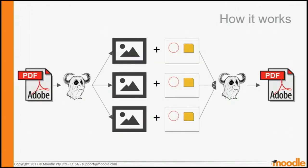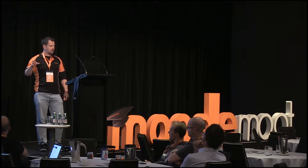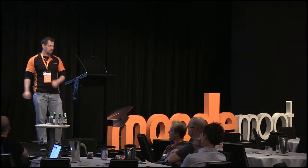The way that plugin works under the hood is it takes a PDF file and then uses a program on the Moodle server called Ghost Script to take that PDF and split it into a series of image files. When you view the files in Moodle, you're looking at the image file in the background and creating annotations on top of it — whatever you draw and all the comments you add. When you're finished, you save it and Ghost Script on the server again makes it into the PDF that students can download.